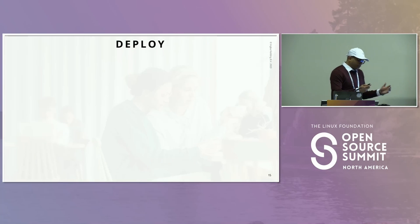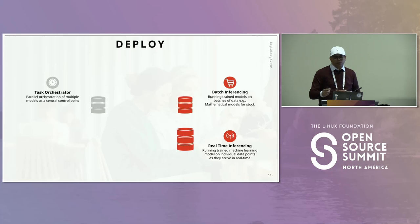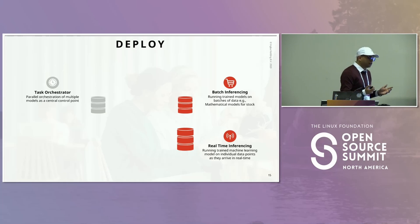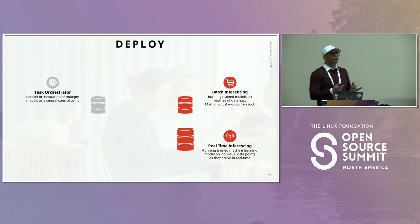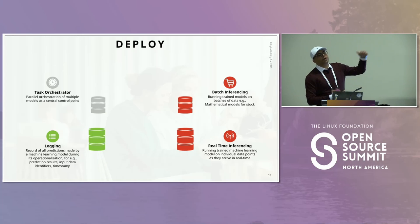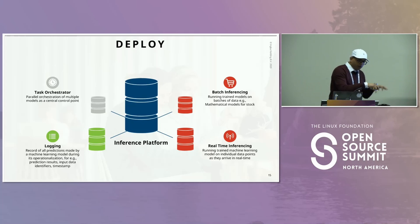Once deployed, we have a task orchestrator with one job: ensure ML pipelines are working and the right data hits the right model. There are two inferencing types: batch inferencing, important for our mathematical models doing stock maximization/minimization/optimization; and real-time inferencing, like recommendation algorithms. Logging each inference and each prediction is critical — this feeds the next phase for drift detection, observability, and accuracy assessment. These components form our inference platform.